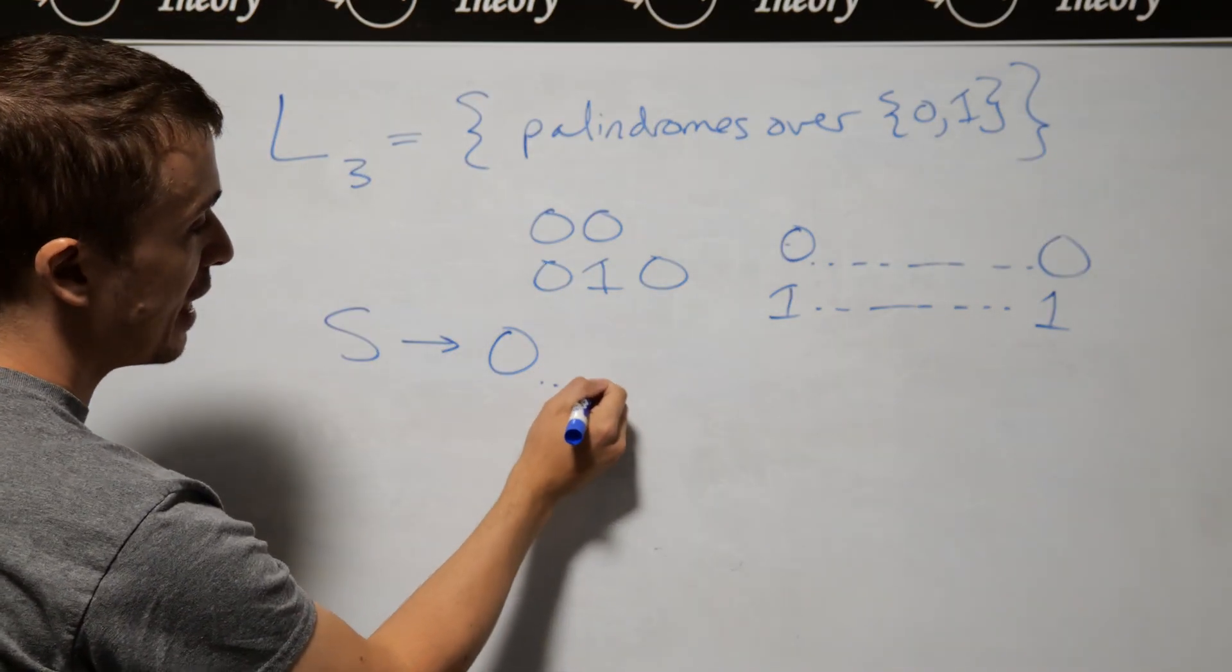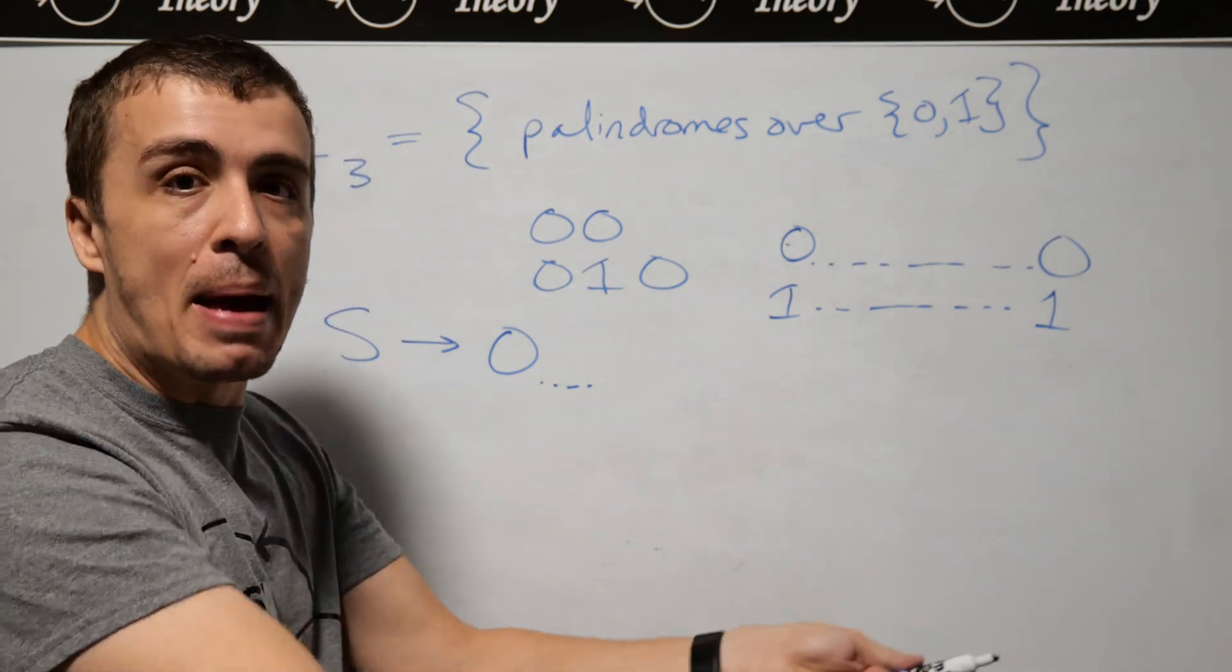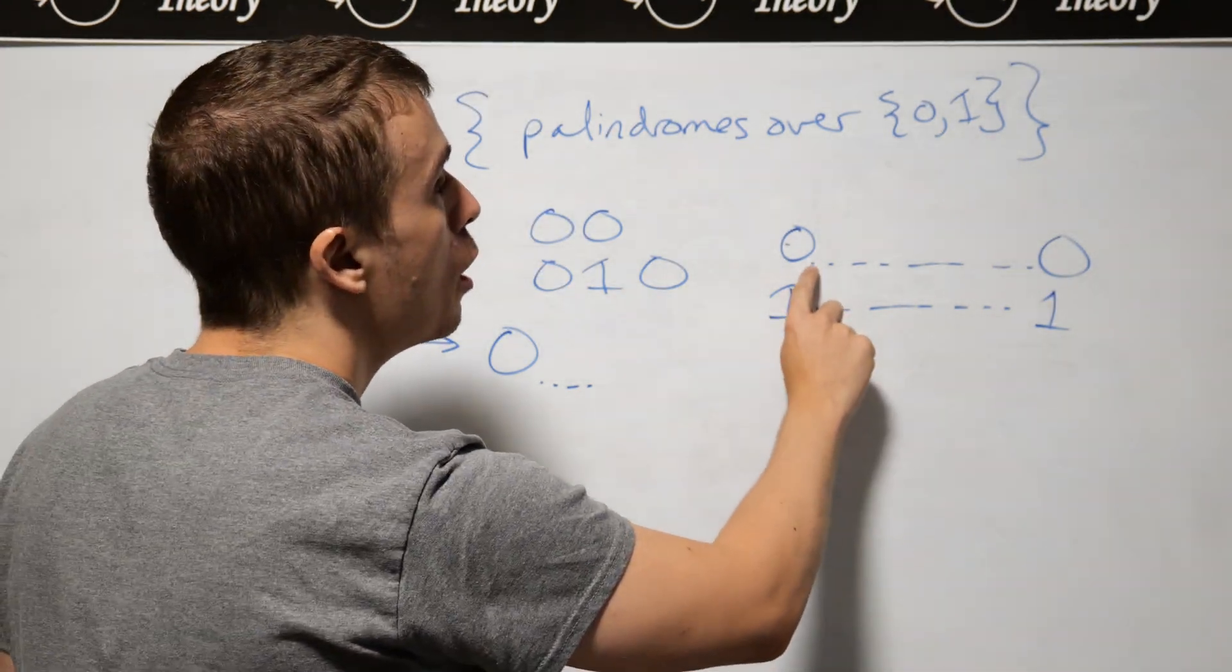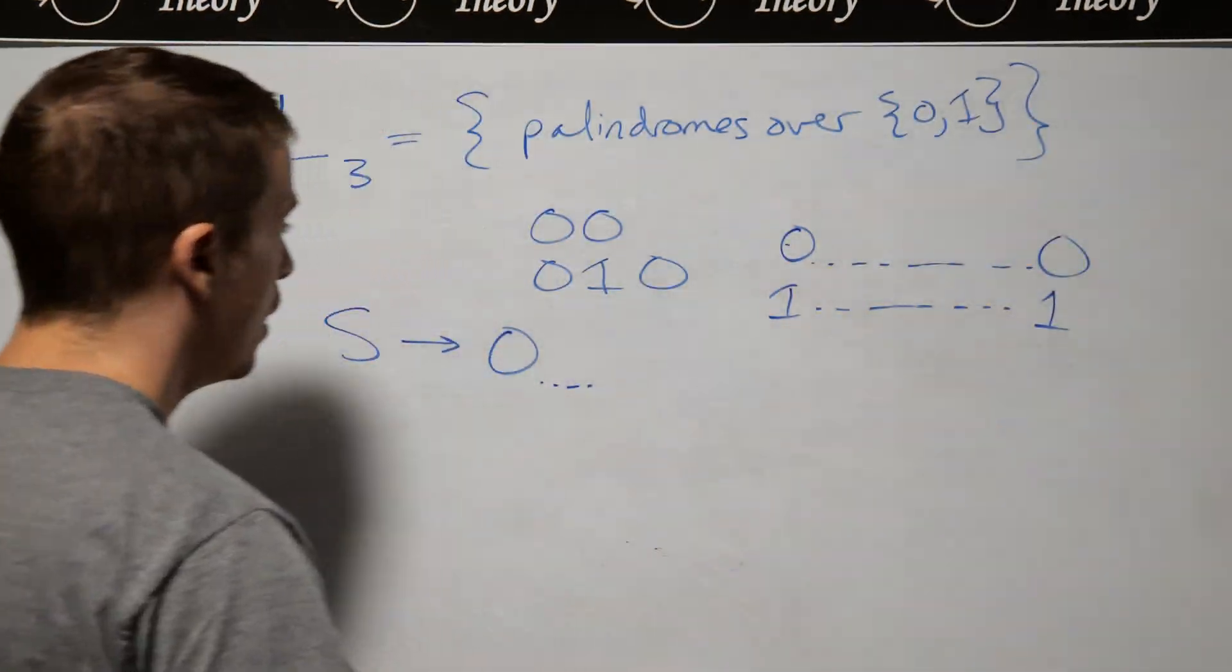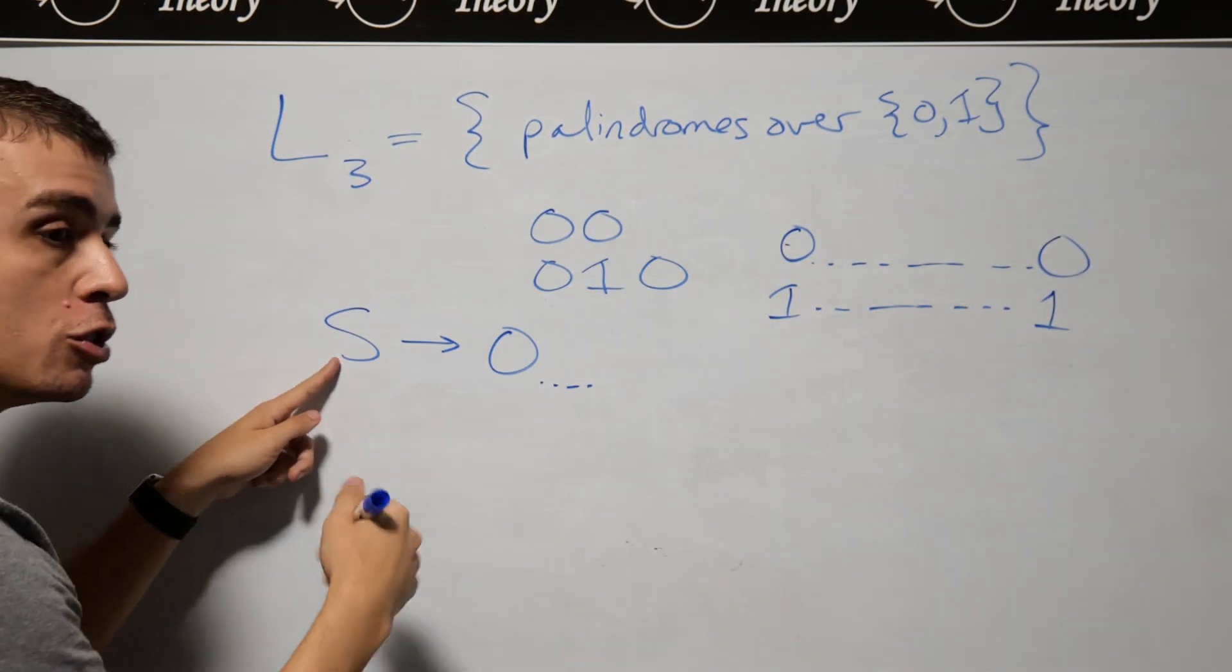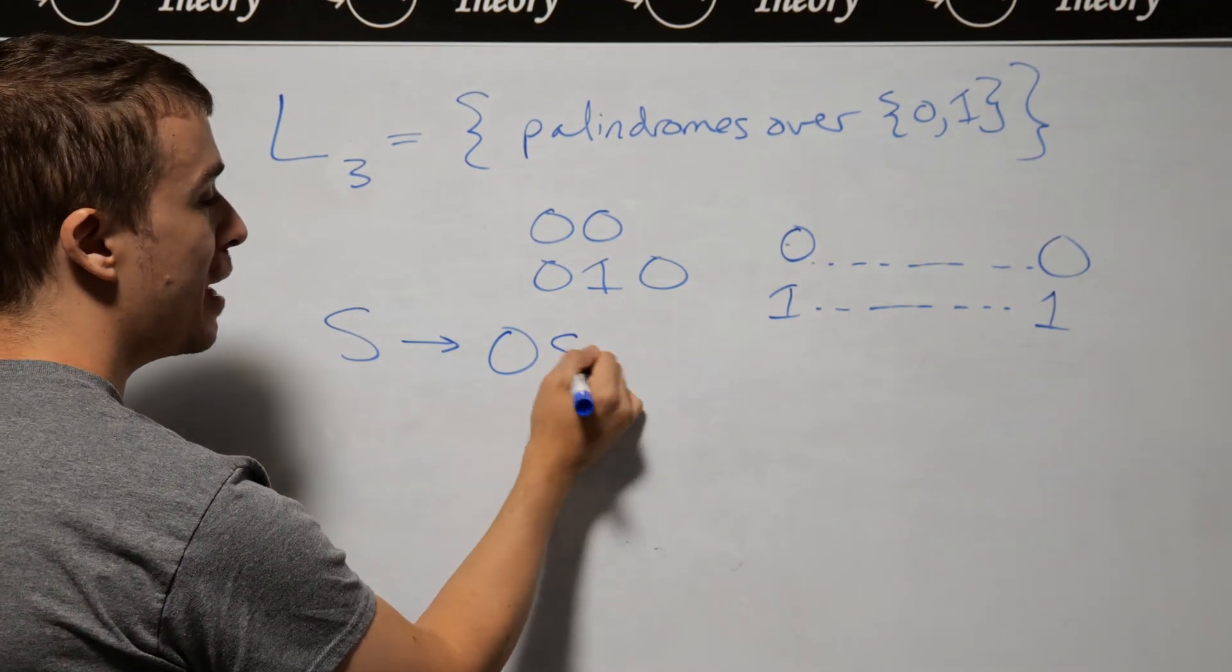What goes in here corresponds to generating any palindrome at all, because there's no correspondence between what happens in the middle and what happens at the ends. If S is going to represent the set of palindromes, I must put an S here.